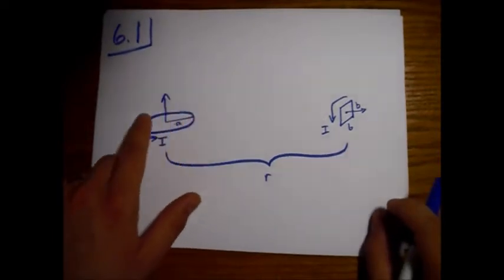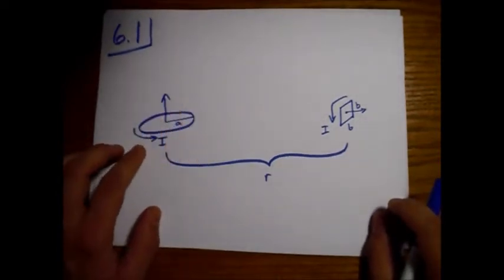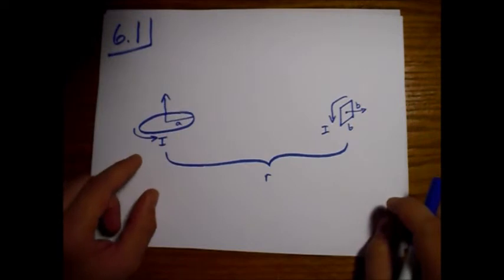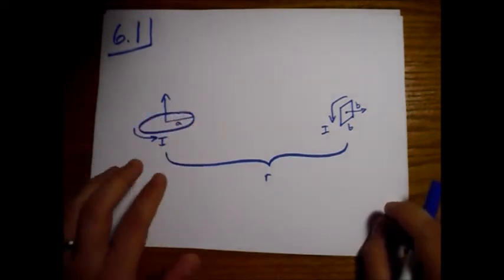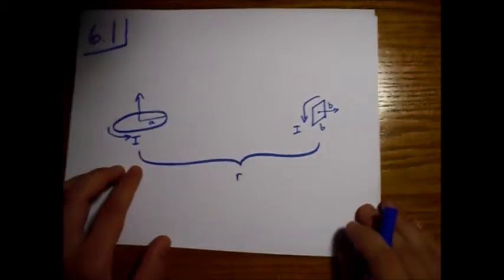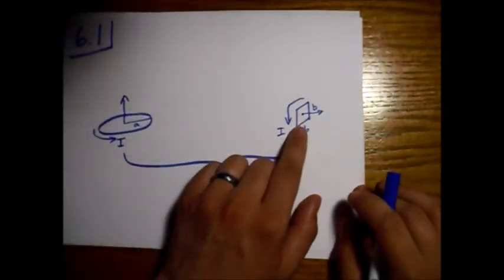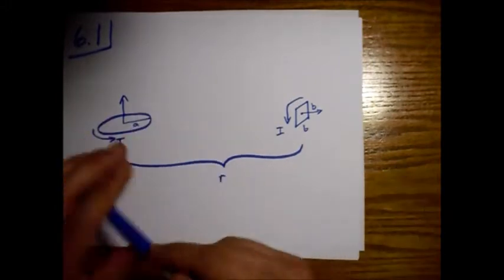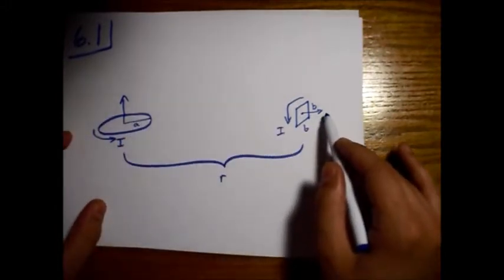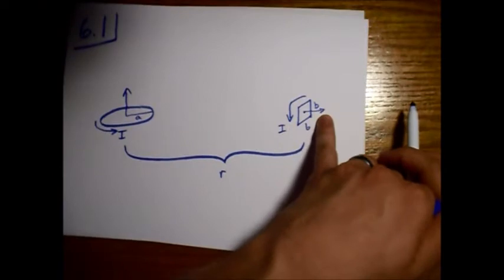What we've got is a loop of wire, so circular. And it has a current I going around it. And then very far away from that, we'll have a little square loop of wire which, based on the drawing, the line connecting these centers is the same direction as this area vector.